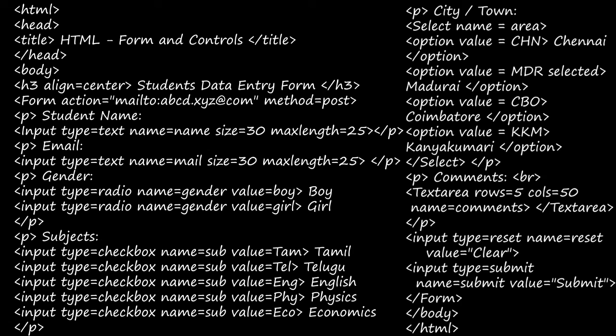And then we need a clear and submit button. For that, input type is equal to reset, name is equal to reset, value is equal to clear. Whatever value you are giving inside double quotes will be displayed in this button. And the next one is input type is equal to submit, name is equal to submit, value is equal to submit. So we will get a submit button. And then slash form, so the form tag is closed, slash body, body tag is closed, slash HTML, HTML tag is closed.